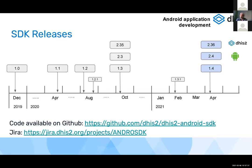We are moving from a four-month release cycle to a six-month cycle, keeping us in sync with the DHIS2 core. The next release after 1.4 will be 1.5, probably in October when DHIS2 2.37 is released.